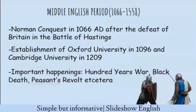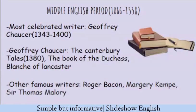Politically the time was not very stable because of the Hundred Years' War, the Black Death, the Peasants' Revolt, and things like that. But despite this political and socio-economic instability, such great literary works were crafted. Geoffrey Chaucer was the most influential and celebrated poet of this time. His prolific works include the Canterbury Tales, written in 1380, and the Book of the Duchess. William Caxton and Roger Bacon also wrote in this period.